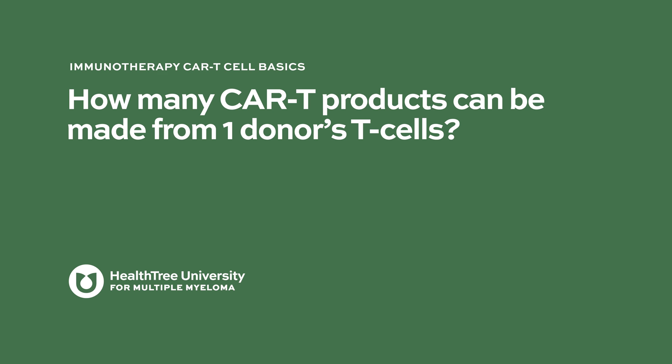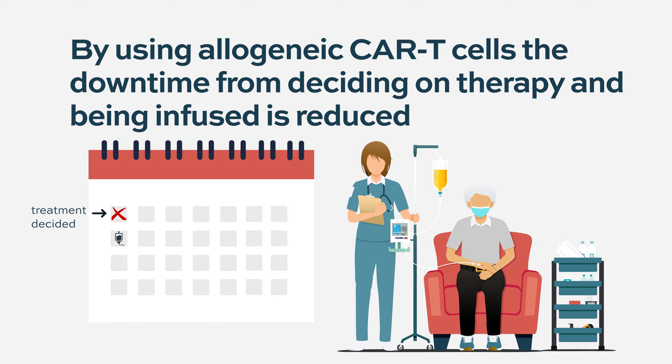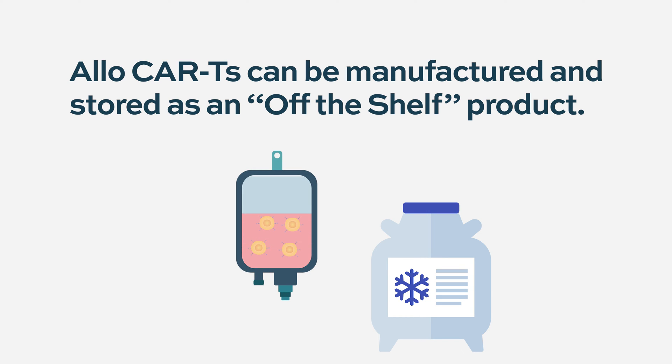How many CAR T products can be made from one donor's T cells? It's not entirely clear how many products can actually be made from it. But from a patient perspective, what it improves is the downtime of manufacturing — which currently ranges somewhere between 7 to 20 days from needle in to needle out. With the universal CAR T, that time frame is significantly reduced because the product is theoretically already made.